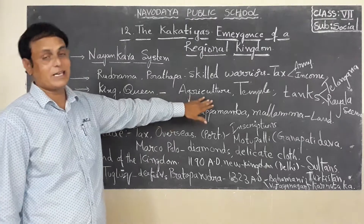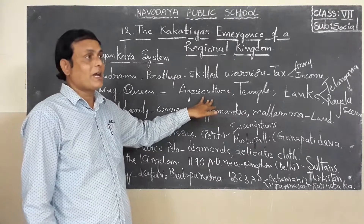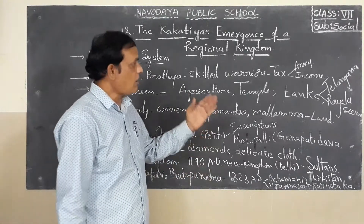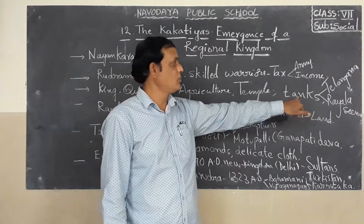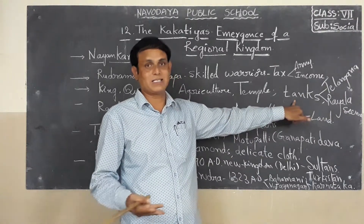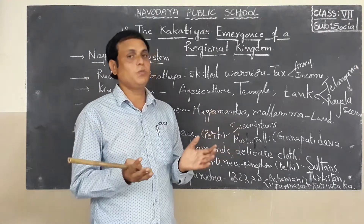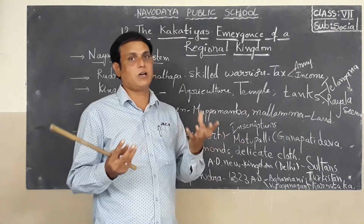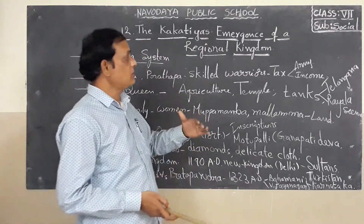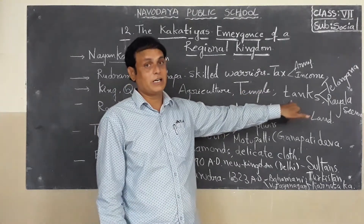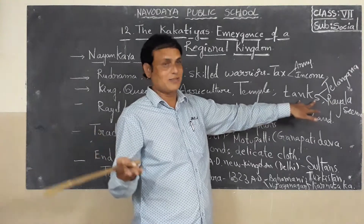They also encouraged agriculture activities. For expansion of agriculture, they started constructing tanks — called Cherubulu. Because South India's land is very suitable for the construction of tanks. At the rainy season, due to rainfall, there is sufficient water. After the rainy season, that water is needed for agriculture, animal drinking, and domestic purposes. So they stored the water through tanks. We can see almost every village has one or two tanks.